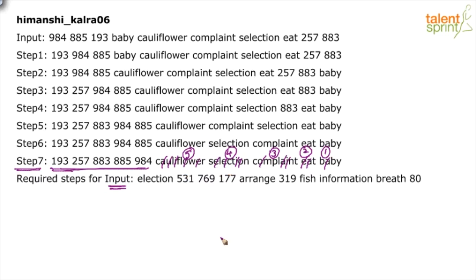Now that we understand the logic, we need to understand the step-by-step process. Compare step one with the input: the number 193 has been brought to the first position and everything else moved aside — 984, 885, then baby, cauliflower, complaint, selection, eat, 257, 883. So in one step we move one number. 193 is brought first because that is the desired output.